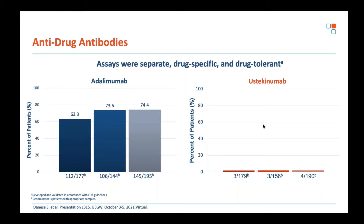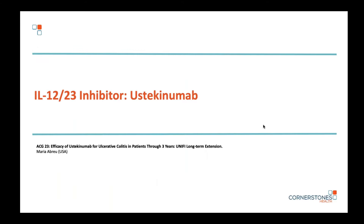Looking at patients with high-titer antibodies, they tend to have low drug levels, though numbers become very small. Notably, ustekinumab does not cause antibodies — a finding also seen with some other novel biologics. This is an absolutely fascinating contrast, and the lack of immunogenicity likely accounts for the lack of drop-off in the ustekinumab arm towards the end of the trial.